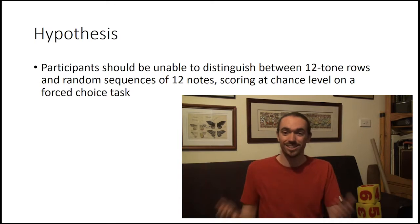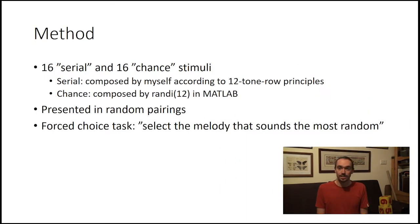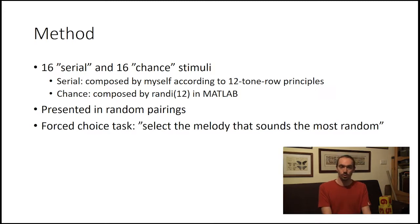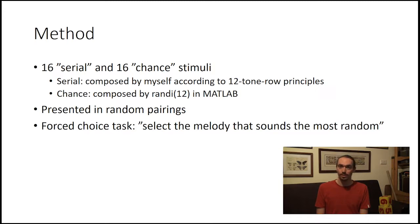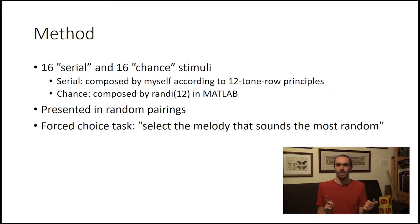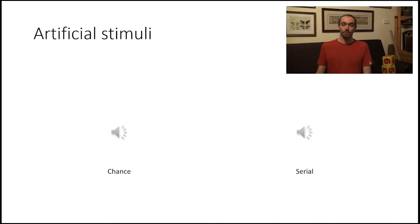My hypothesis is simply that they can't tell the difference between chance and serial music. I aimed to test this using 16 pieces of serial music and 16 pieces of chance music, both highly controlled — just sequences of 12 notes — either composed by myself according to 12-tone row principles, or composed by the rand function in MATLAB. These were presented in random pairings, so you'd hear one sequence of 12 notes and then another, and it's a forced choice task: you have to pick which one sounded more random to you. The instruction I gave people was: select the melody that sounds the most random.